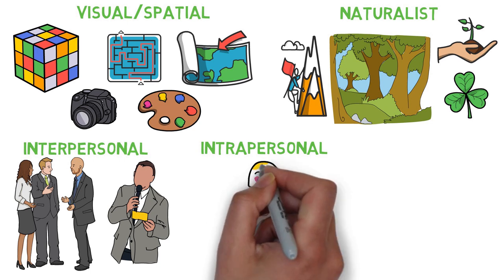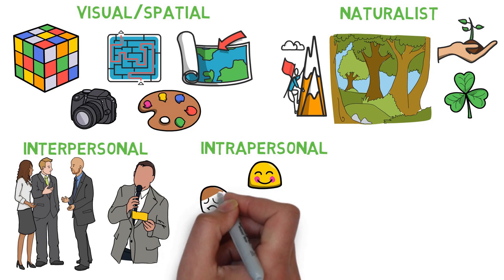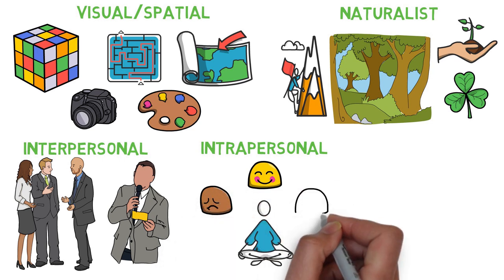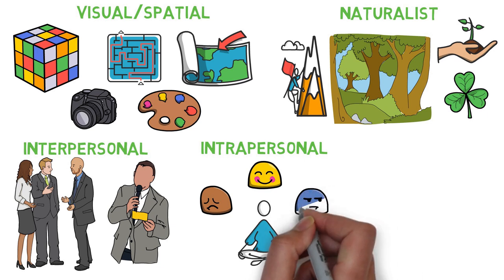They can build accurate mental models of themselves and use such models to make decisions about their lives. These people are usually introverted and tend to shy away from others. People high in intrapersonal intelligence are often good psychologists or historians.